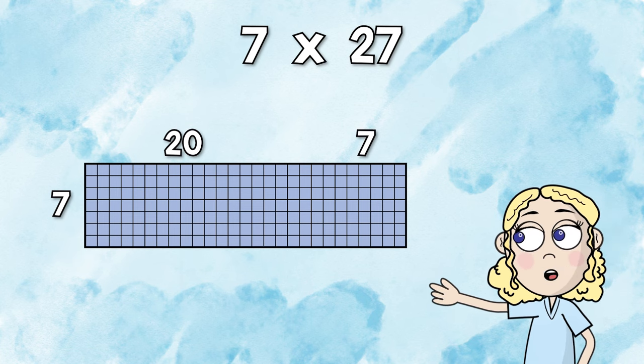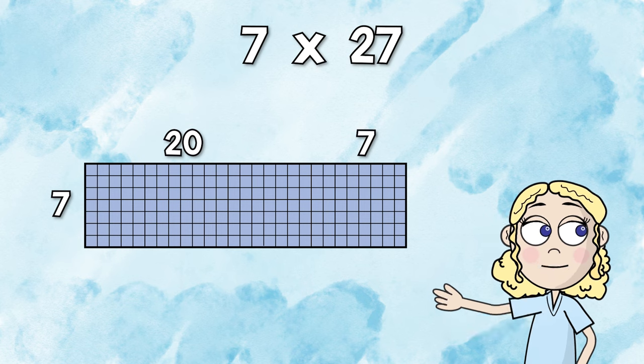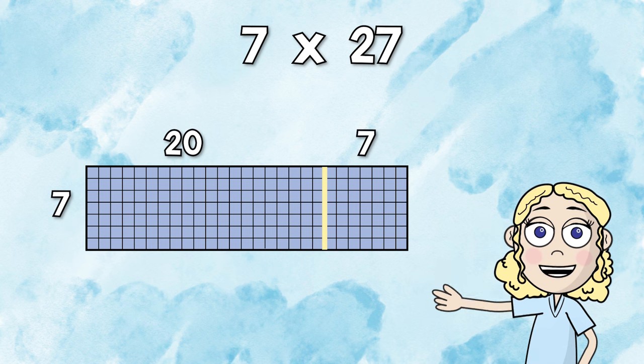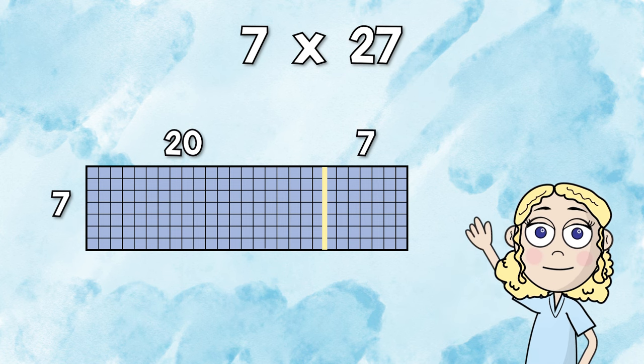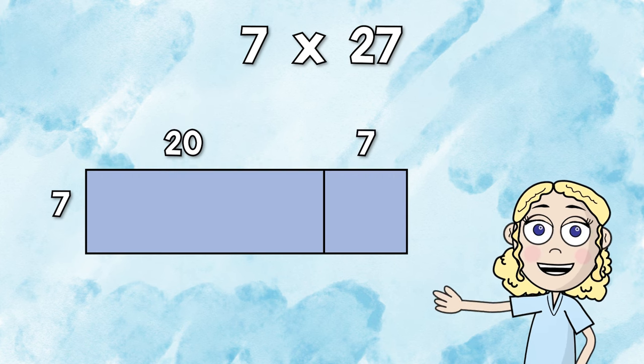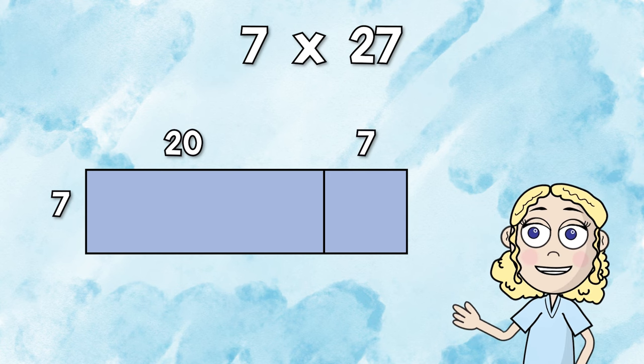You don't have to draw a grid every time we do partial products, but it's helpful to know that the grid is there and why we break it apart the way we do. So as you can see here, we're going to put a vertical line between 20 and 7. Let's take the grid away. This is probably what you're going to draw when you're doing an area model.